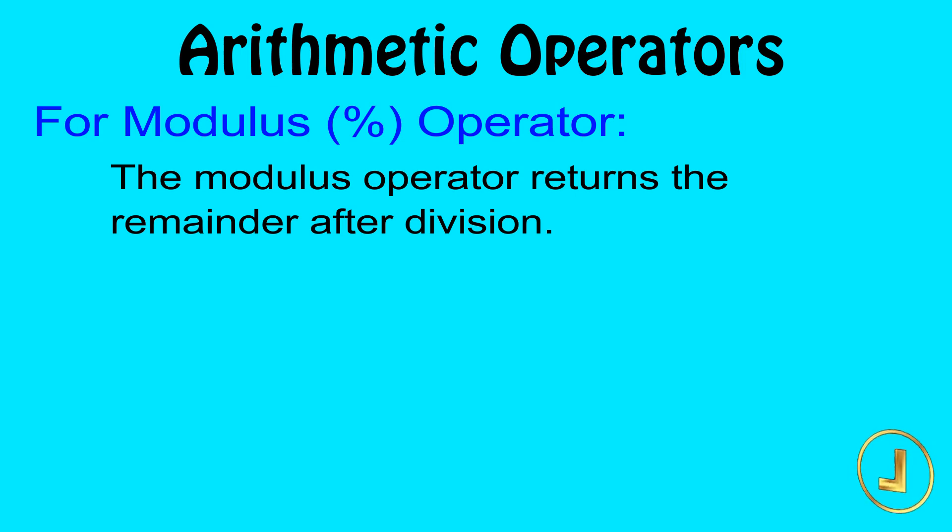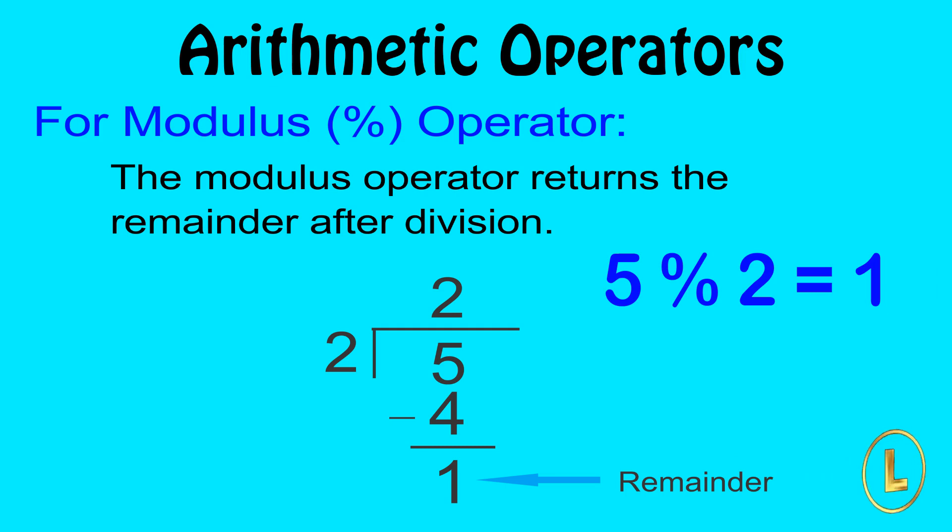The modulus operator returns the remainder after division. For example, if we divide 5 by 2, then the remainder will be 1. So the result of 5 modulus 2 will be 1. This operator can only be used with integer operands.